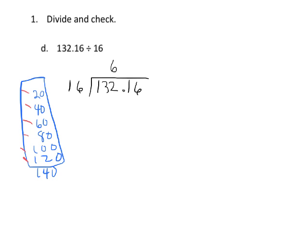So 16 goes into 132, I'm guessing 6 times. Over here on scratch paper, let's multiply: 6 times 6 is 36, 6 times 1 is 6 plus 3 more is 9, so that's good. I don't cross over the 132, so I can subtract 96. We're going to see something kind of cool. This is 12 minus 6, which is 6, and then 12 minus 9 is 3.